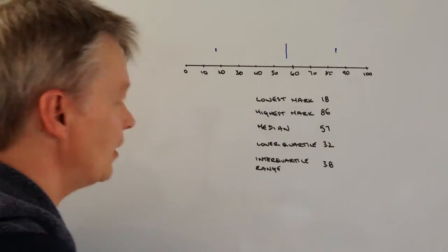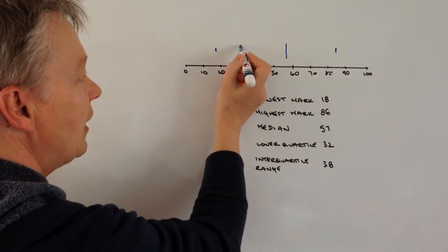The lower quartile is 32, which is a mark here.